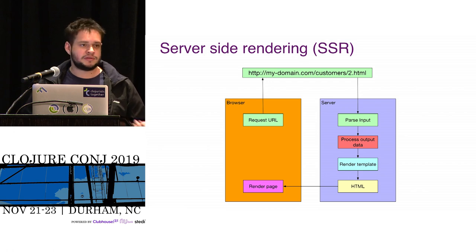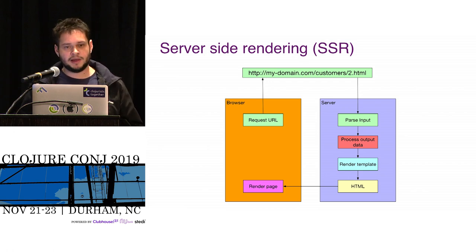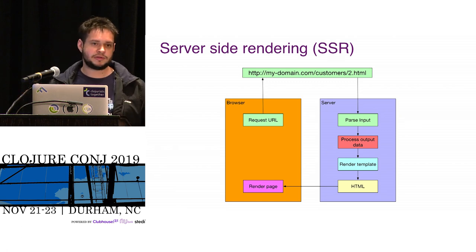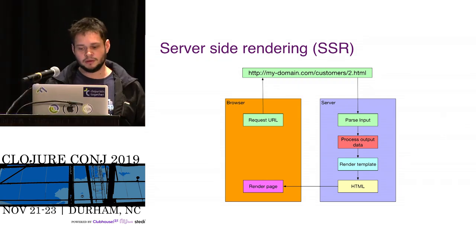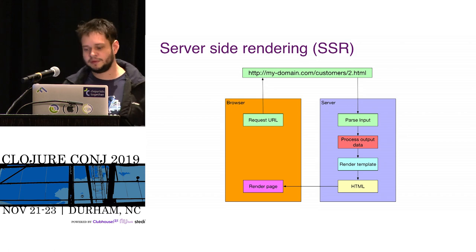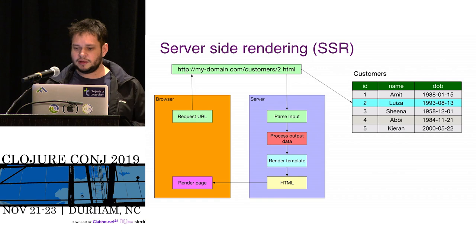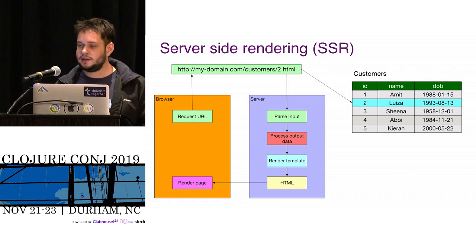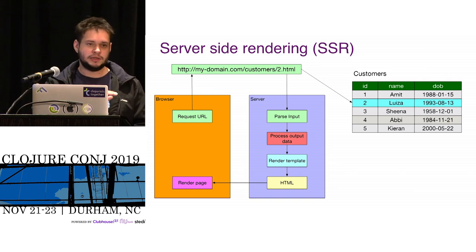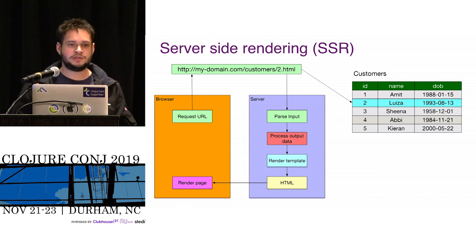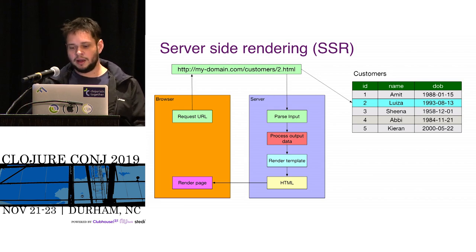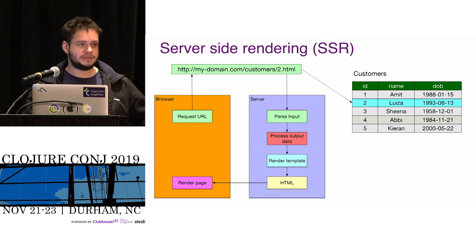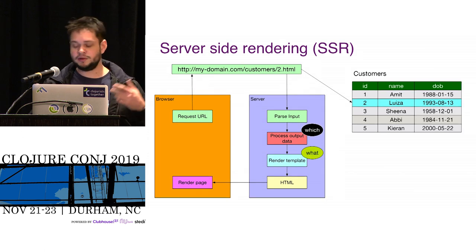In the data fetching story for a Rails app — which is similar to any server-side rendering app — you have a browser. The browser issues a request to the server. The server parses the input, generates some HTML, and you get that back to the browser. All the browser has to do is render the thing. So it's kind of a dummy thing — the browser doesn't have to do much.